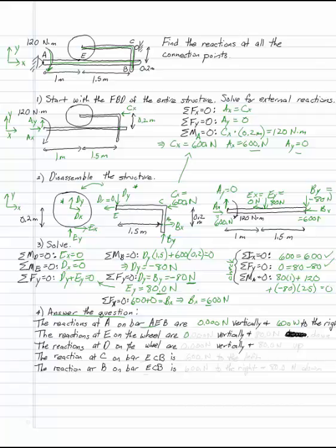The reactions at E on the wheel are again 0 vertically and 80 newtons, in this case this one's going down. At D I have 0 vertically and 80 newtons up. On bar ECB I can do the reactions at C and B. This is 600 newtons to the left and 600 newtons to the right, 80 newtons down.